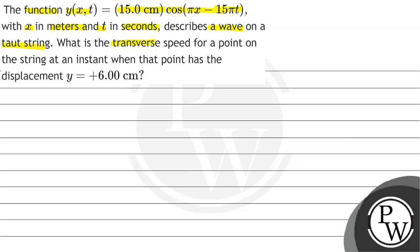What is the transverse speed for a point on the string at an instant when that point has the displacement y equals 6 cm? We have a wave which we are representing from y of x, t.